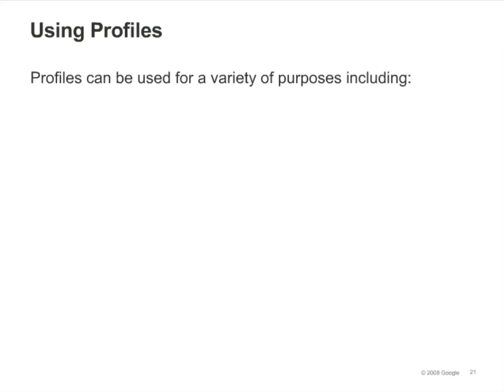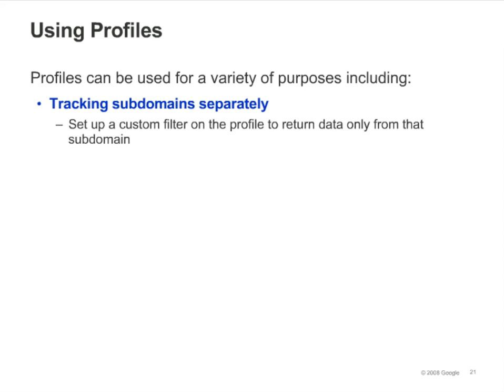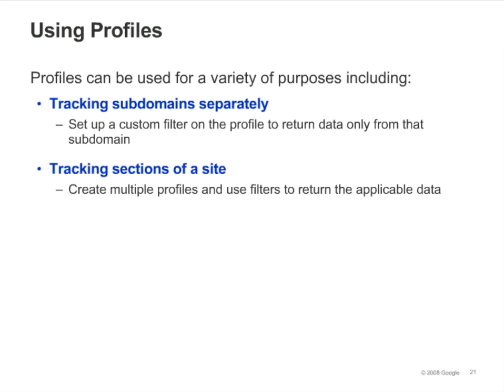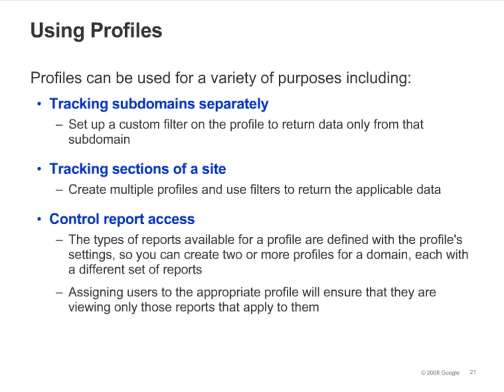Here are some typical examples of profiles you might set up. You might have a profile that only contains traffic data for a specific subdomain, a profile that tracks only a certain part of a site, or that only tracks a certain kind of traffic. You might have profiles each of which has a separate set of reports. You could give some users access to one of these profiles, and other users access to another profile, so that each user would see only the reports that apply to them.